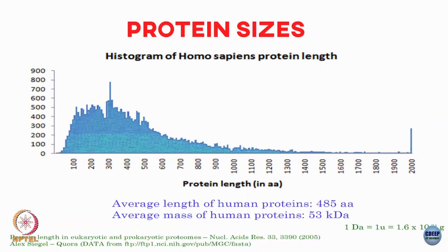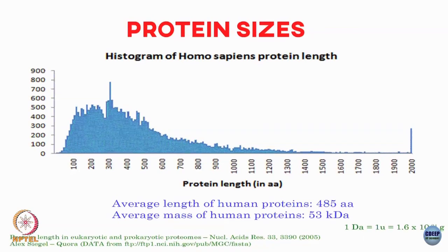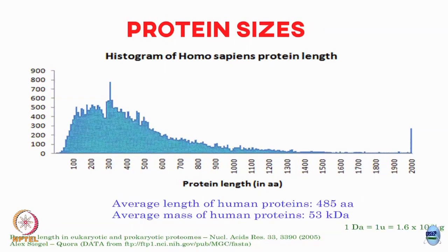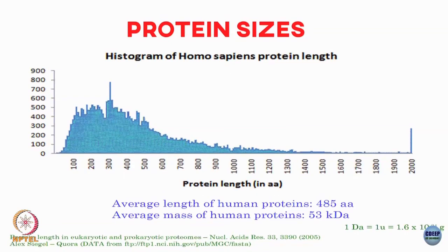If you work out the numbers, the average length of a human protein comes out to roughly 485 amino acids, and the average mass of a human protein comes out to around 53 kilo Daltons — where a Dalton is 1.6 × 10⁻²⁴ grams.